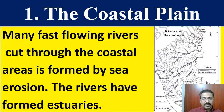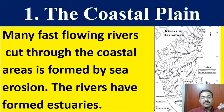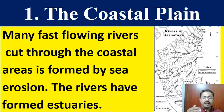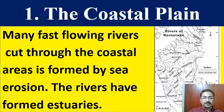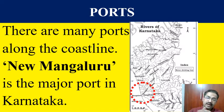Karnataka Coastal Plains have many rivers. Many rivers which originate in the western side of the Western Ghats flow towards the west and join the Arabian Sea - rivers like Netravati, Kali, and Sharavati all flow towards the west and join the Arabian Sea.